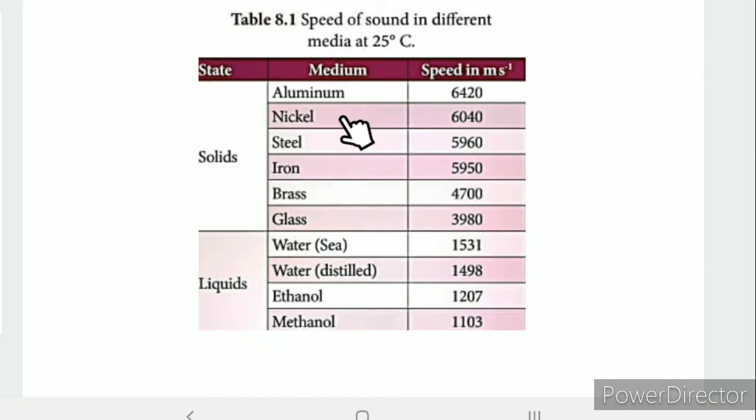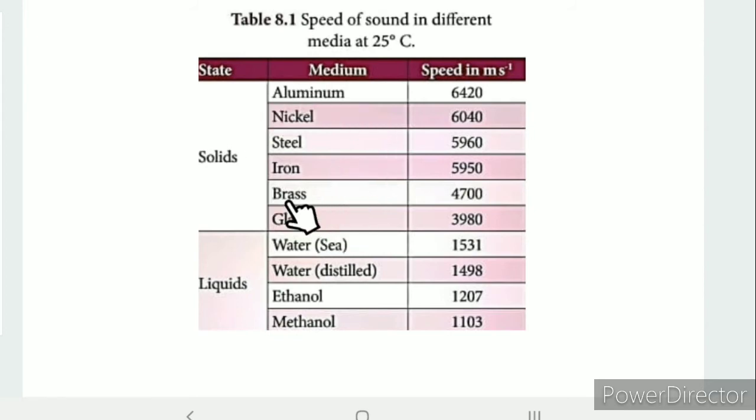The table lists the speed of sound in solids including aluminium, nickel, steel, iron, brass, and glass.